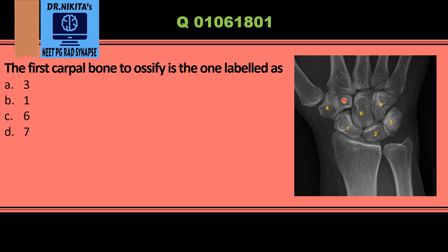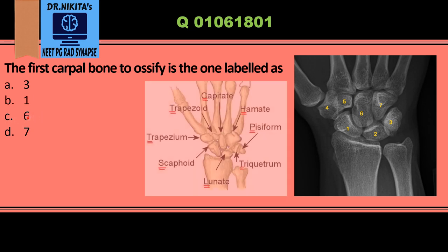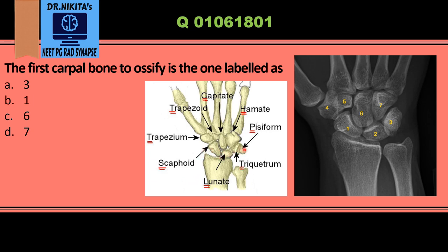Continuing: 'try to catch her' — trapezium, trapezoid, capitate, and hamate. The first bone to ossify is capitate, labeled number six, which is why the answer here is C. To recap the full mnemonic: scaphoid, lunate, triquetrum, pisiform, trapezium, trapezoid, capitate, and hamate.